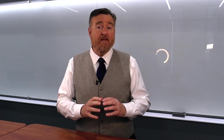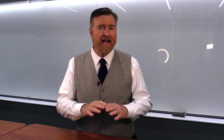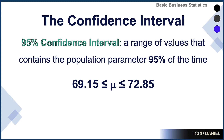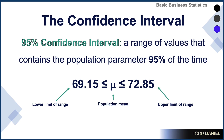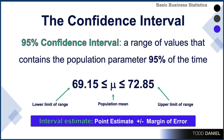In statistics, rather than trying to be 100% certain, we're going to specify a level of precision that we are comfortable with. And typically we're going to use a 95% confidence interval. A 95% confidence interval is a range of values that contains the population parameter 95% of the time. There is a lower limit, an upper limit, and in the middle is the population mean — our point estimate — with the upper and lower limits defined by the margin of error. An interval estimate is the point estimate plus and minus the margin of error.